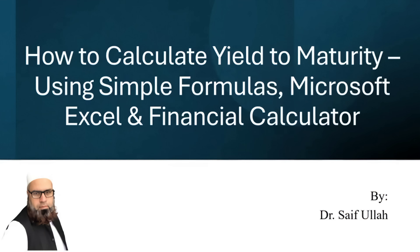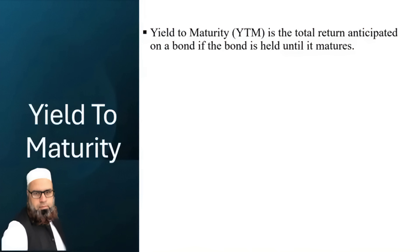Finance tutorial. In this video, we will discuss how to calculate yield to maturity using simple formulas, Microsoft Excel, and financial calculators. Yield to maturity is the total return anticipated on a bond if the bond is held until it matures. It is expressed as an annual rate and represents the internal rate of return of a bond investment, assuming all coupon payments are reinvested at the same rate and the bond is held to maturity.